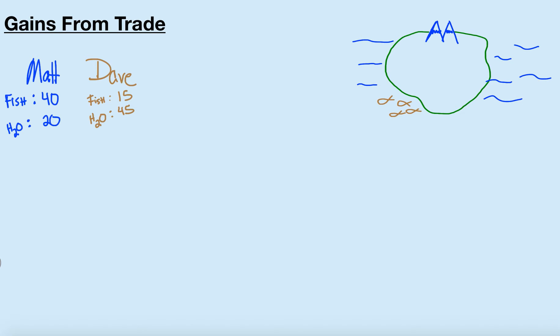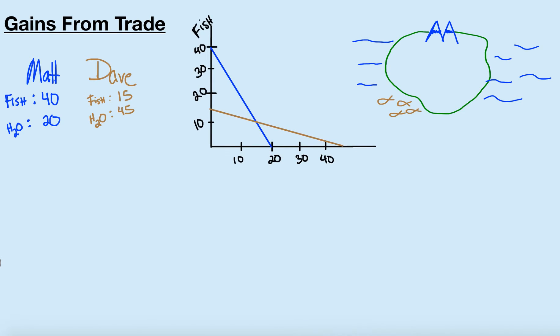I've chosen very easy numbers to work with and we are going to assume that these two individuals have constant opportunity cost. So if they are giving up fish for water, it's going to be the same ratio as when they first started. If you don't remember the difference between increasing opportunity cost and constant opportunity cost, you can go back and find the video on that. So we're first going to draw Dave and Matt's production possibility frontier, and we're going to assume that it's linear. Dave is in brown — if he spends all day getting fish he can get a maximum of 15 fish, and if he spends all day getting water he can get a maximum of 45 units of water. This is the PPF for Dave.